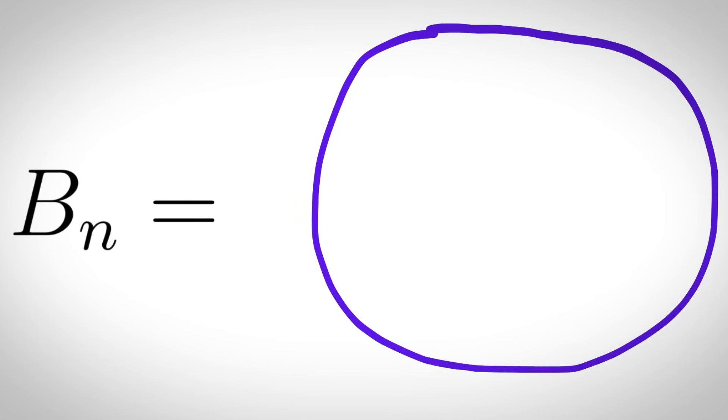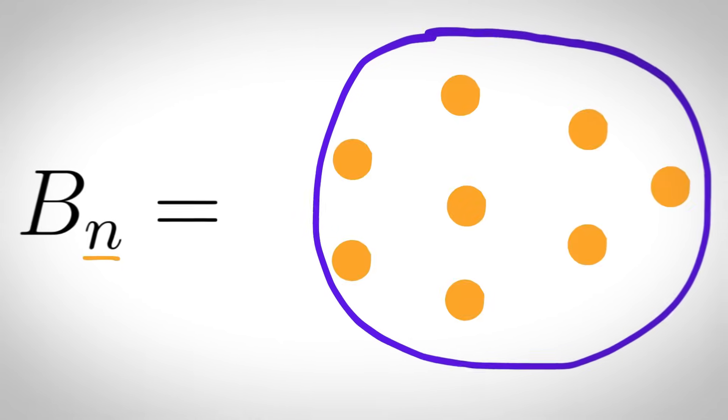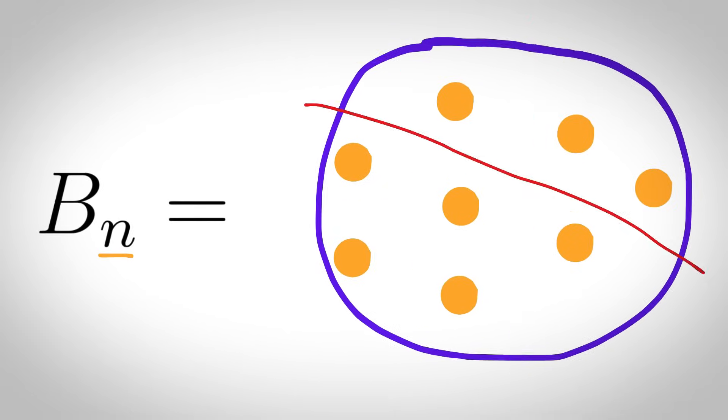Bell prime: the nth Bell number is the number of ways you can partition a set of n elements. Some of these are prime. Think of it as the number of ways you can cut up a birthday cake so that each of the slices has at least one candle.